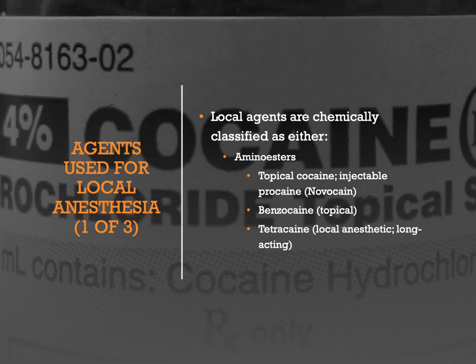Cottonoids are soaked in cocaine and the surgeon uses them to pack the nose — for example during rhinoplasties. However, cocaine is used less frequently today, with better alternatives such as lidocaine combined with phenylephrine and oxymetazoline to anesthetize and shrink the mucous membranes. Benzocaine is a topical amino ester anesthetic with a rapid onset and duration of about 30 to 60 minutes. It's commonly used prior to bronchoscopy or difficult intubation with a fiber optic scope.